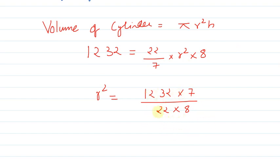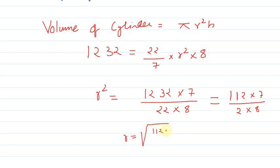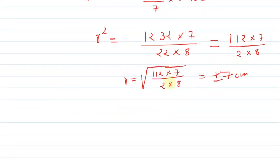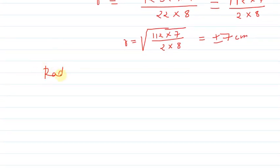Dividing 22 and 1232 by 11, we get the value as r is equal to the square root of 112 times 7 upon 2 times 8, which gives us r is equal to plus or minus 7 centimeters. As you all know, the value of r can never be negative, so the radius of the cylinder becomes 7 centimeters.